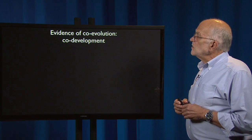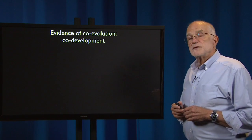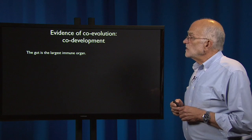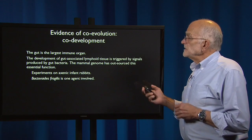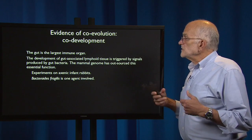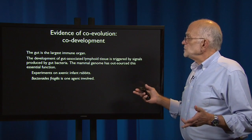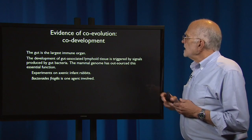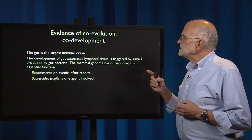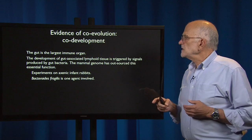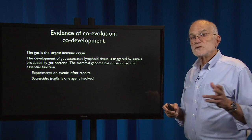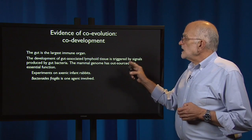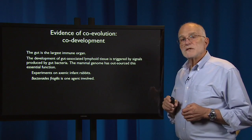The evidence of coevolution is actually co-development. The gut is the largest immune organ, and the development of gut-associated lymphoid tissue, GALT, is triggered by signals produced by gut bacteria. One of those is Salmonella. The mammal genome has outsourced this essential function.